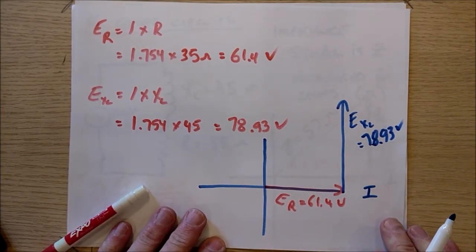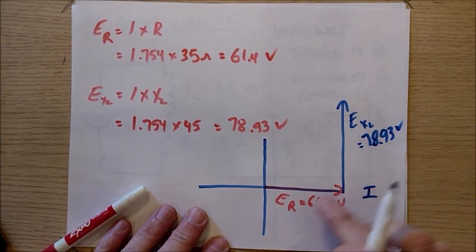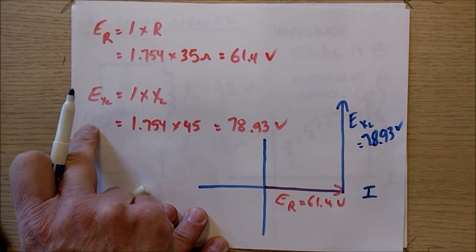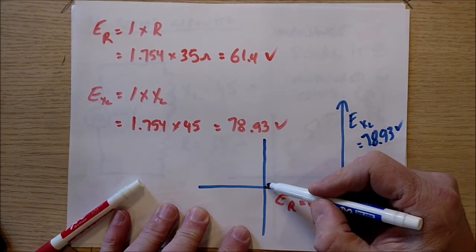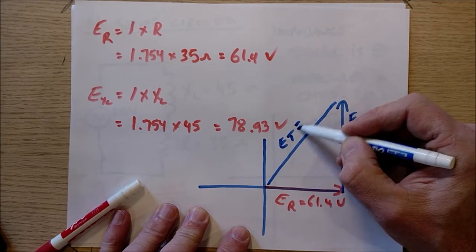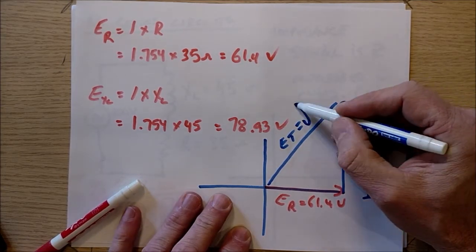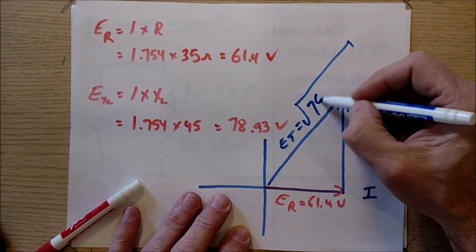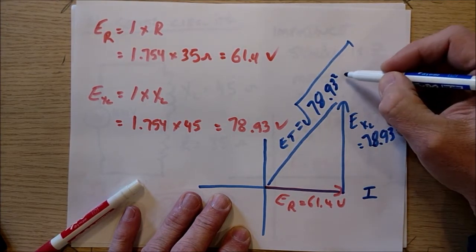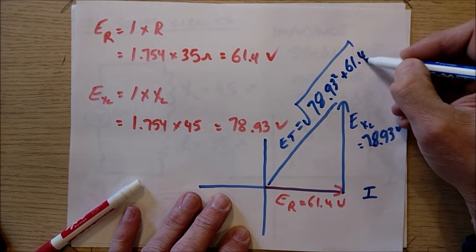And supposedly, the sum of these two, the phasor sum of these two, is equal to my total circuit voltage, which is 100 volts. Let's find out. Here is the sum of the two. E total, it should be equal to the square root of 78.93 squared plus 61.4 squared.